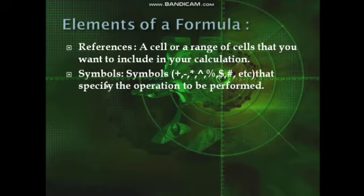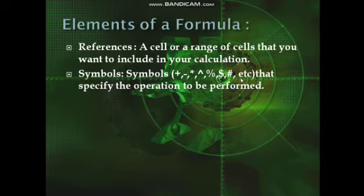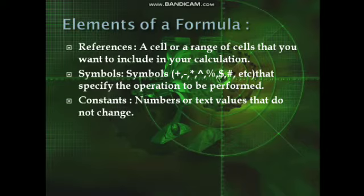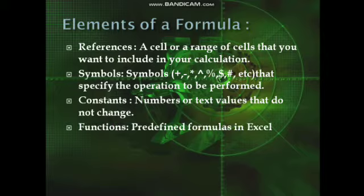Next is symbols. Symbols like plus, minus, star, power of, percentage, dollar, hash, etc., can be included in the operation according to our need. Next is constants — numbers or text values that do not change. Next is functions, which are the predefined formulas in Excel.